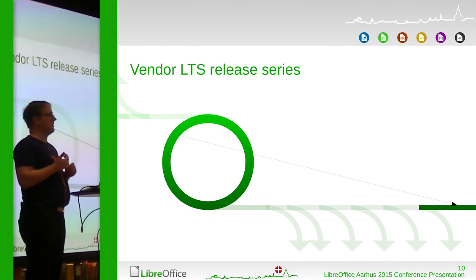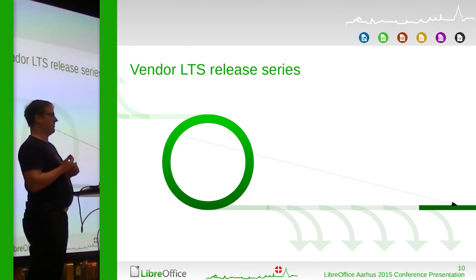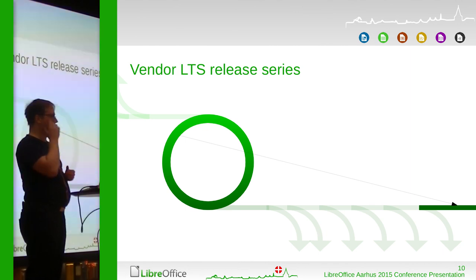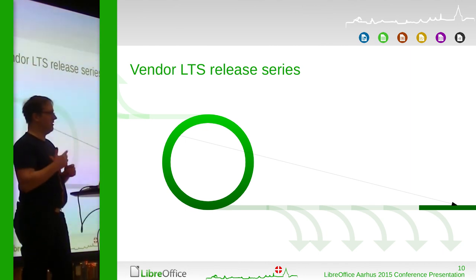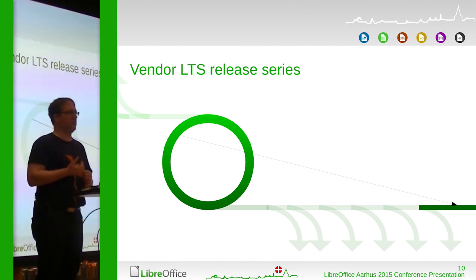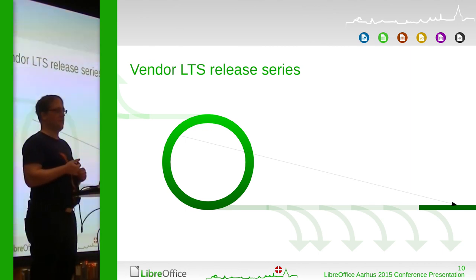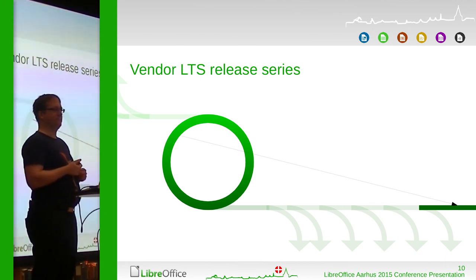So at the end, when the TDF version goes out of support, you have roughly 600 bug fixes on it. That's roughly what I would estimate.